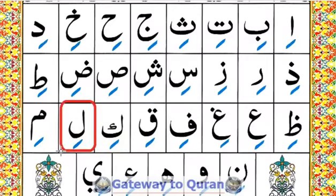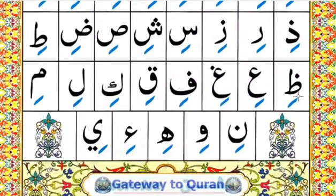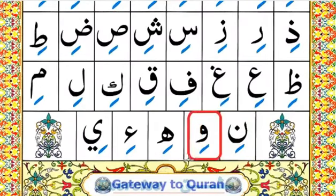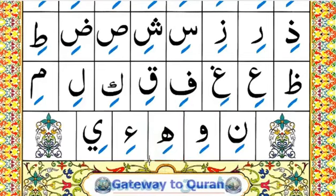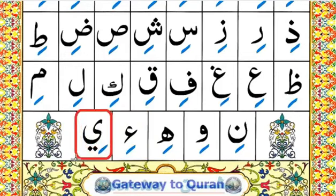Lam kasra = li. Mim kasra = mi. Noon kasra = ni. Waw kasra = wi. Haa kasra = hi. Hamza kasra = i. Ya kasra = i.